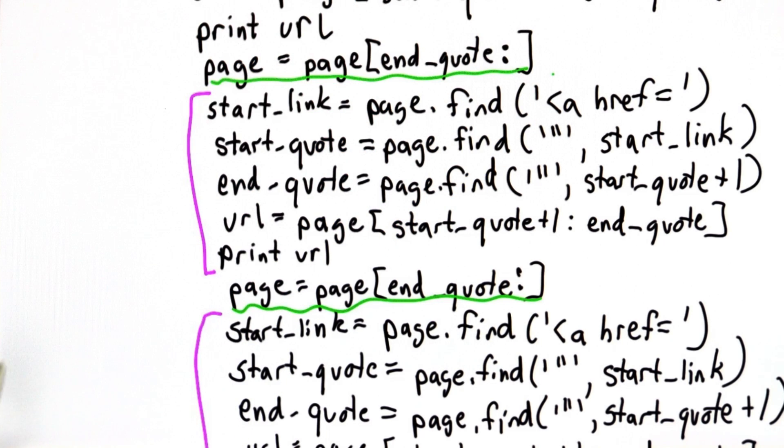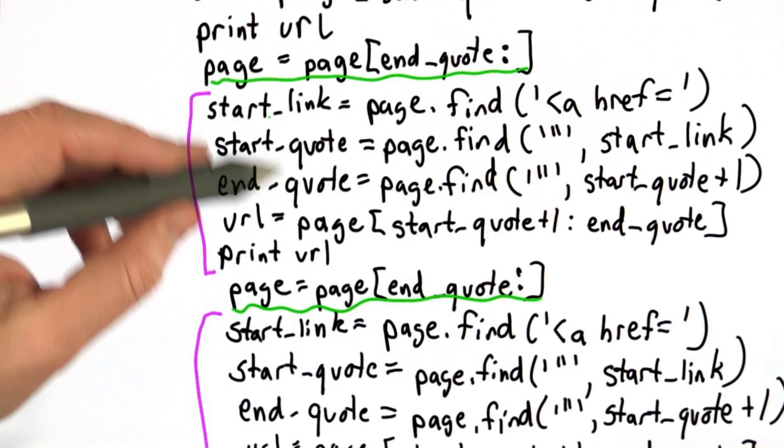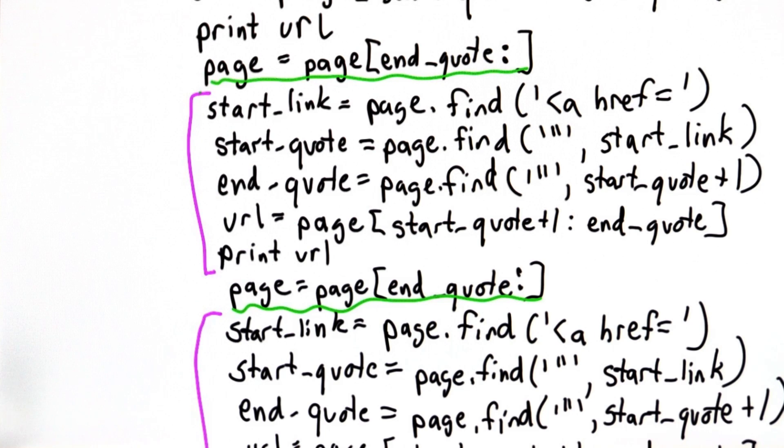So the idea behind procedural abstraction is that anything that we're doing over and over again, we want to abstract, we want to make it a procedure, and we want to make the things that change inputs.